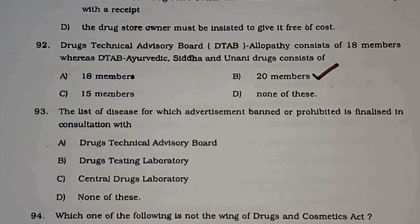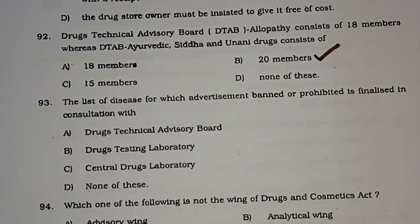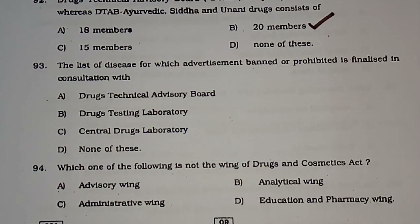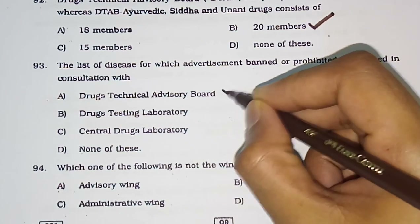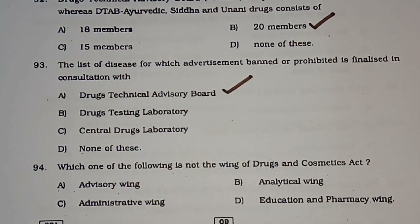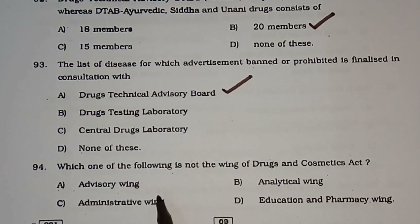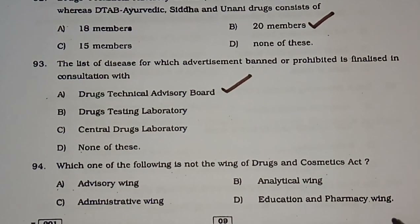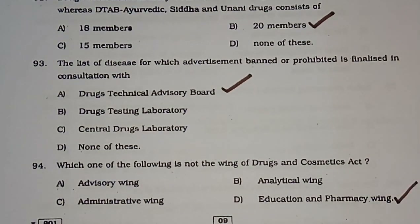Question number 93: The list of diseases for which advertisement is banned or prohibited is finalized in consultation with — Drug Technical Advisory Board (DTAB), drug testing laboratory, central drug laboratory, or none of these. The correct answer is DTAB. Question number 94: Which one of the following is NOT a wing of the Drugs and Cosmetics Act? Advisory wing, analytical wing, administrative wing, or education and pharmacy wing. The correct answer is option D — education and pharmacy wing.